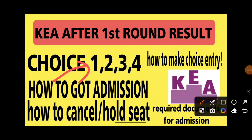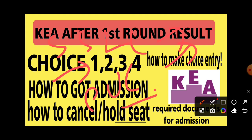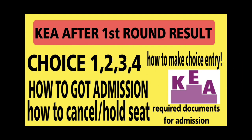We usually use all documents, but we also use original documents. If you use the original documents, you can update them. We have a TC — a transfer certificate, a bank cash transfer, a rural certificate, and other major documents.